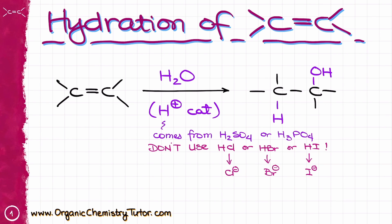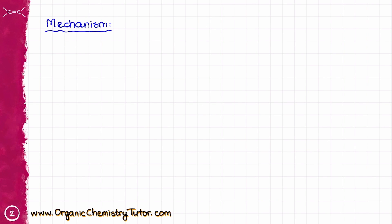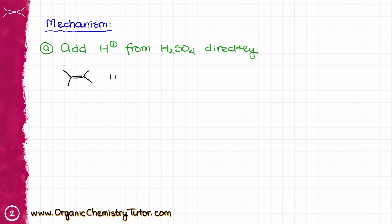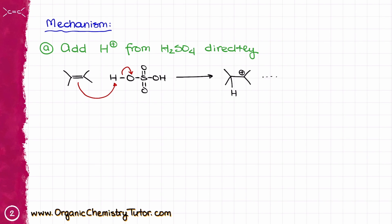That happens because those three acids will produce Cl-, Br-, and I-, which are good nucleophiles, and while they are going to be competing with water for the nucleophilic attack, they are just going to be reacting with your carbocation, and this way you are going to be losing your catalyst. There are two major approaches to the mechanism of this reaction. The first approach adds the H+ from H2SO4 directly across the double bond. However, this approach is statistically unlikely, and many instructors will consider this approach incorrect, although it does show up in some textbooks, especially in an introductory organic chemistry course.